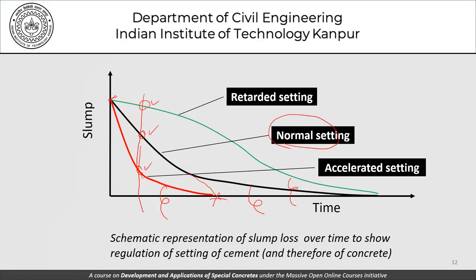This schematic shows what set regulators mean. If this is our normal setting process — slump starts here and goes to zero — then with an accelerator the slump drops faster, and with a retarder it drops more slowly. So the slump at a given time can be higher or lower depending on whether it is normal, accelerated, or retarded setting. When using these admixtures, we must specify how much retardation or acceleration is needed — not only the initial slump but the slump at, say, three or four hours or fifteen minutes.